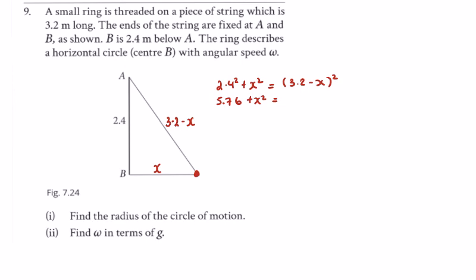3.2 squared is 10.24, so we have 10.24 minus 6.4x plus x squared. The x squared terms cancel, giving us 6.4x equals 4.48. Dividing, x equals 0.7. So I have my new triangle with sides based on that value.